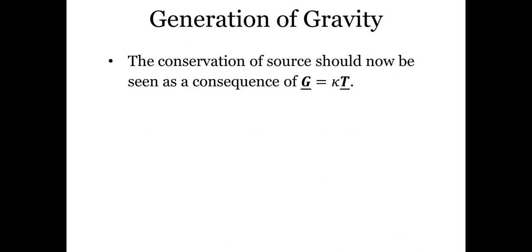The conservation of source should now be seen as a consequence of Einstein's equation, not the other way around. We specified the conservation of source as the inspiration for Einstein's field equations, but now that we have the field equation — presumably apart from a proportionality factor — this equation is to be postulated as the truth. The inspiration we had, which is the automatic conservation of the source, is to be taken as a consequence of the field equation, because axiomatically the field equation is true, and the automatic conservation of source has to come from the field equations as the fundamental principle.